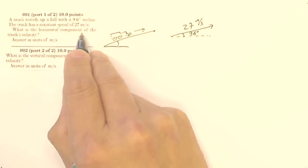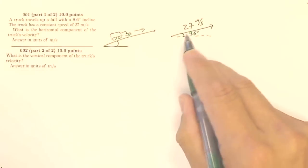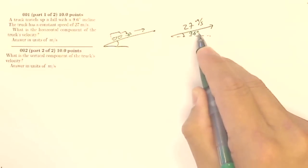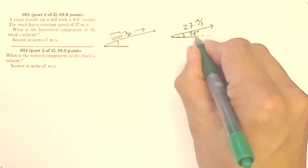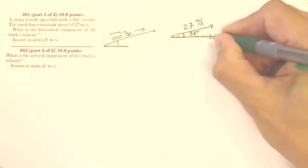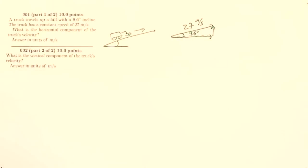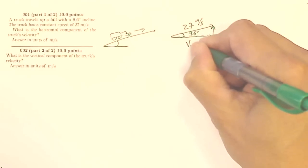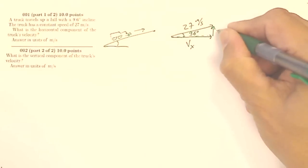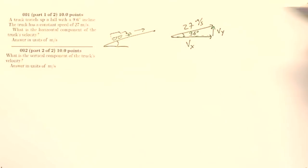What is the horizontal component of the truck's velocity? If the truck is going 27 meters per second at an angle, we can say that the truck is going horizontal velocity and vertical velocity at the same time. So this is my velocity in the x direction, my horizontal, and this is my velocity in the y direction, my vertical.